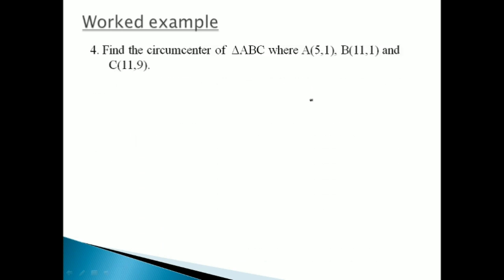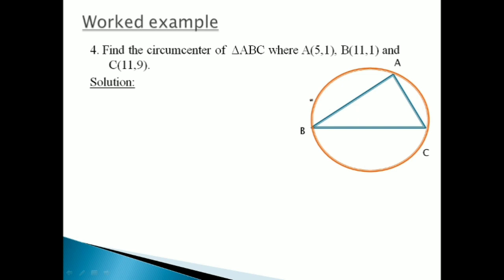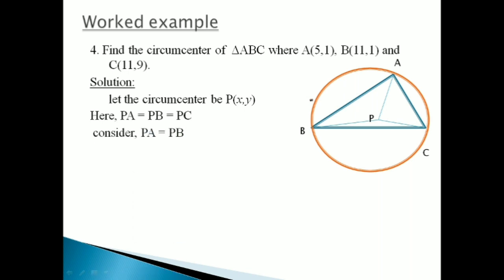Last example for the video — find the circumcenter of triangle ABC where A, B, and C have given coordinates। Circumcenter basically क्या होता है — एक triangle दिया हुआ है A, B, C — उन vertices से pass होता हुआ एक circle है called the circumcircle, and its center is called the circumcenter। Let us say circumcenter is P = (X, Y)। Since it is not on any axis, neither X nor Y is 0। PA, PB, and PC are all radii of this circle — so PA = PB = PC।